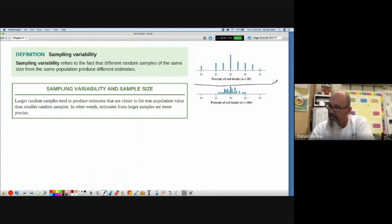However, both of these have the same shape, roughly symmetrical. They both have the same center, 30, but they have very different spreads. So the larger the sample size, the smaller the variability is going to be.